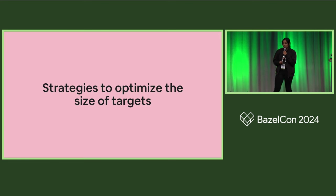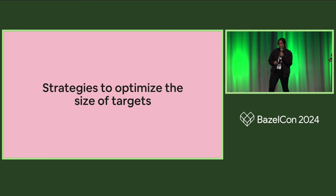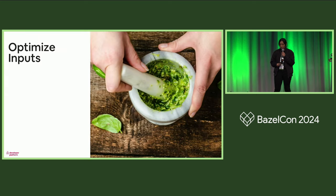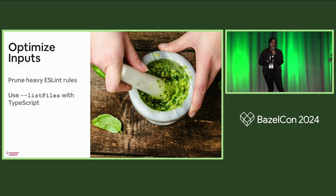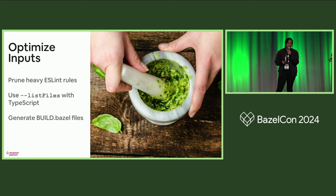Even though we're achieving cache hits, we still found that our sandboxes were too big, our targets were really large, and we were taking too long to build — our performance wasn't exactly where we would like it to be. So I'll talk through a few strategies to optimize the size of our inputs, and these are going to be a little JavaScript-specific. We use ESLint as our linter, we use a flag called list files in TypeScript, and we also generate our build files — I'll give you the web edition of build file generation here.